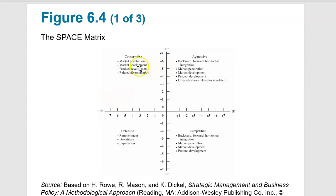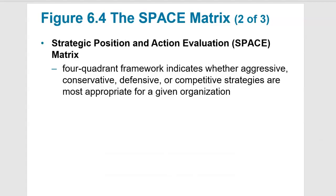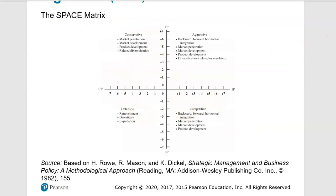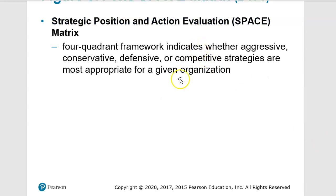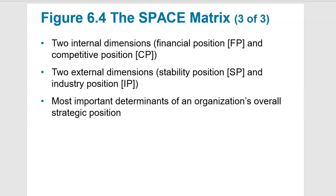The SPACE matrix is a four-quadrant framework. If we're conservative, we're looking at market penetration, market development, product development, and related diversification. A more aggressive approach would involve integration—vertical or horizontal—to aggressively move forward. In the defensive stance, we're looking to retreat, sell certain divisions, liquidate other assets, or pull back and close stores. In the competitive landscape, we'd pursue backward, forward, and horizontal integration with market penetration, development, and product development.